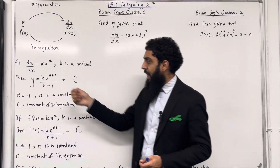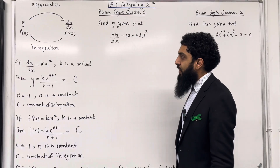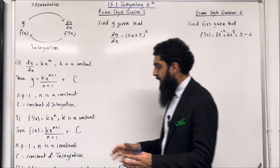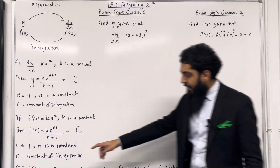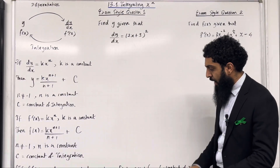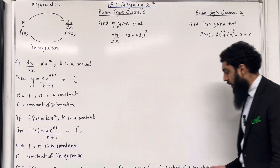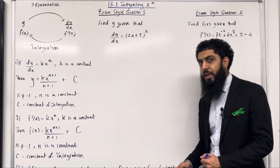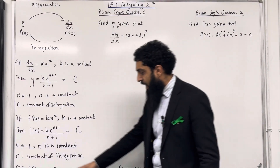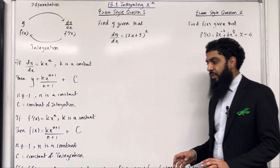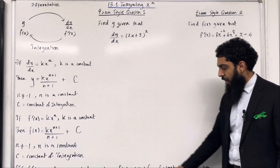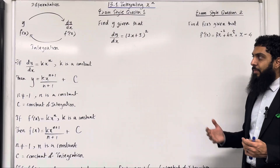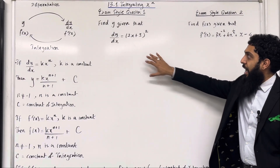If n equals minus 1, substituting that in gives a problem (division by zero). Alternatively, you can rewrite dy/dx as f'(x) and y as f(x). Moving on to the next crucial rule: if f'(x) equals a for some constant a, then f(x) equals ax plus c, where c is the constant of integration. This is true because if you differentiate ax + c with respect to x, you get precisely f'(x) = a. So integrating a constant a with respect to x gives ax + c. These are the key facts of 13.1 integrating x to the power n, and I'll be implementing these within exam style question 1 and exam style question 2.